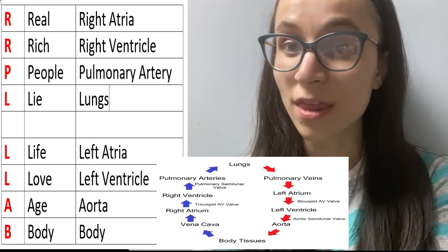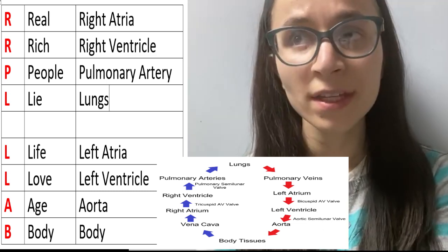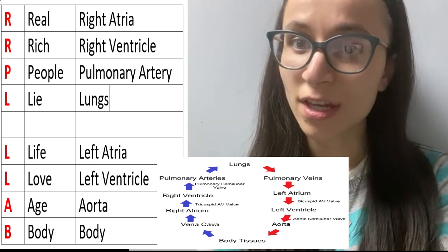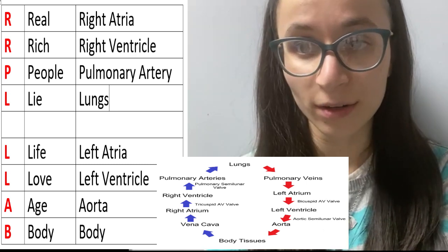So L for Life stands for the left atrium. L for Love stands for left ventricle. A for Age stands for the aorta. And B for Body stands for the body because the aorta brings the blood to the body.